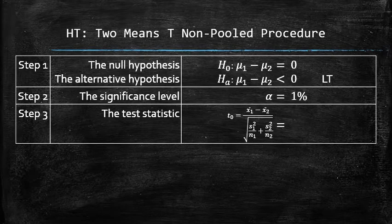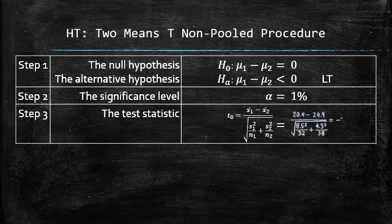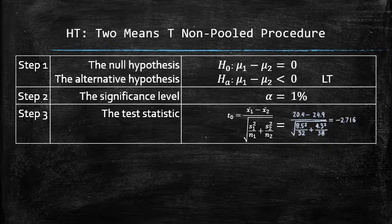The test statistic can be computed using the formula. In our case, the test statistic t0 is equal to negative 2.716. Step 3 is complete.